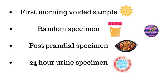First morning voided sample — this is the sample collected as soon as the patient wakes up. Then there is random specimen, which can be collected any time of the day. Third is postprandial specimen, which is collected mainly two hours after a meal.